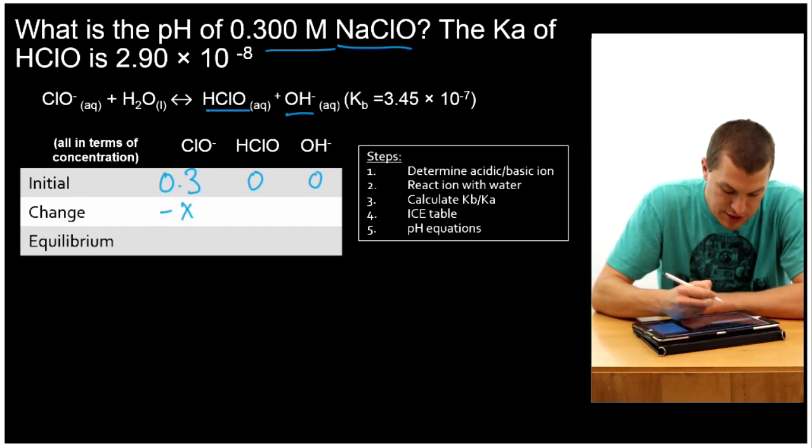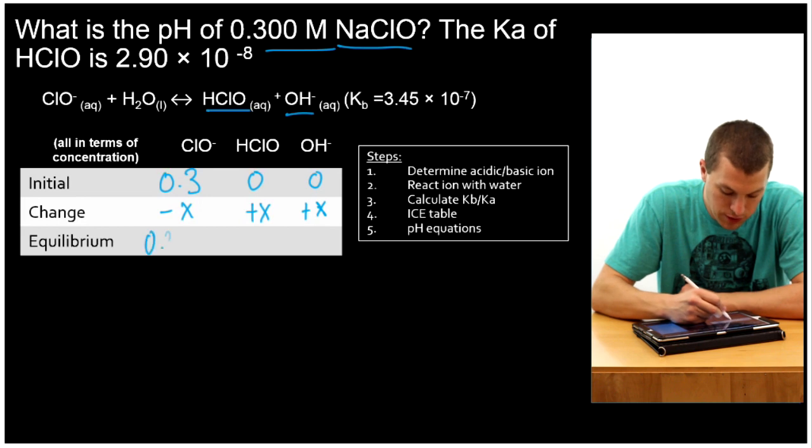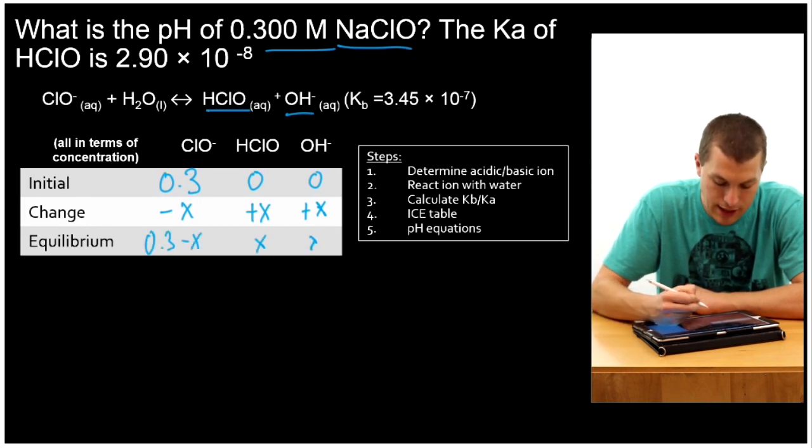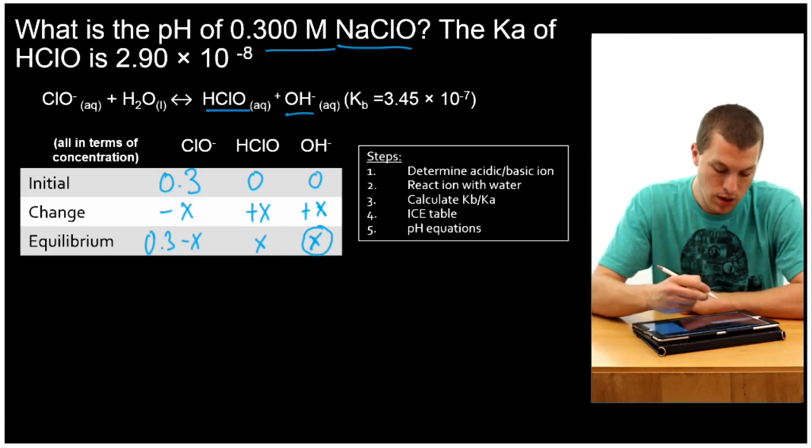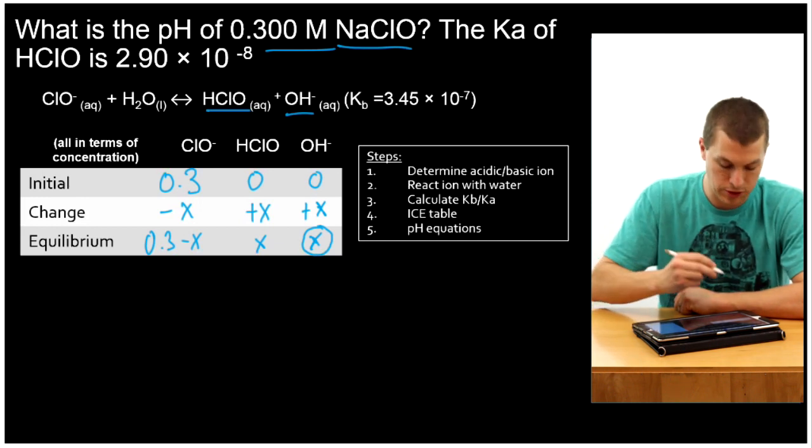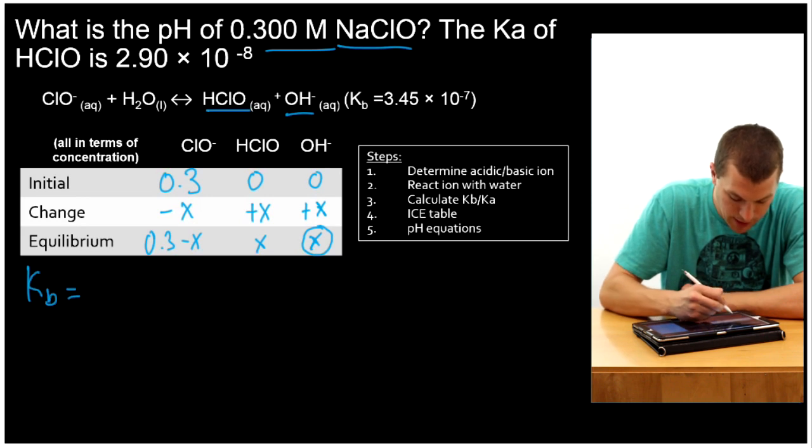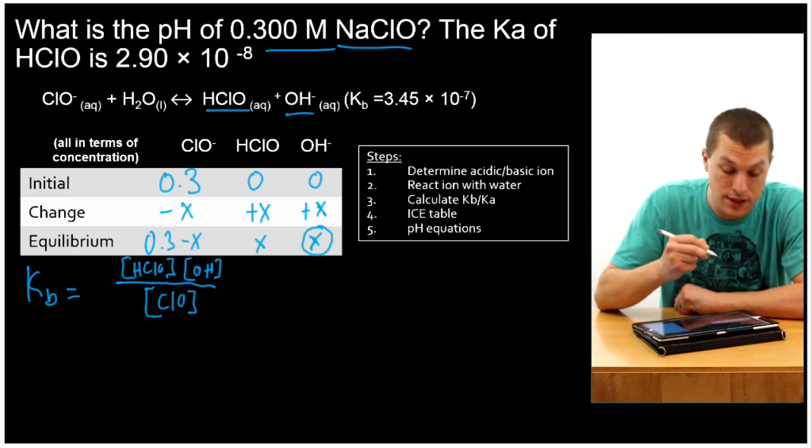The reactants are going to drop, so my change here is going to be minus X. And my products are going to increase, so the change is going to be plus X and plus X. So at equilibrium, I'm going to have 0.3 minus X for ClO-, X for HClO, and X for OH. Remember that ultimately what we want to find is X so that we can plug it into our pH equations to get the pH. Now that we've written down our ICE table, we're ready to plug it into our equilibrium expression. We know that Kb is going to be equal to products over reactants. So that's going to put HClO up top, OH up top, and ClO on the bottom. Our water isn't included because it's liquid.